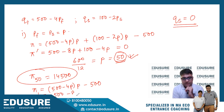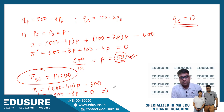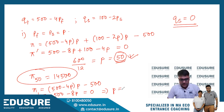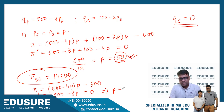So, 500 minus 8p equals zero, which gives p equals 500 divided by 8, which is 62.5.